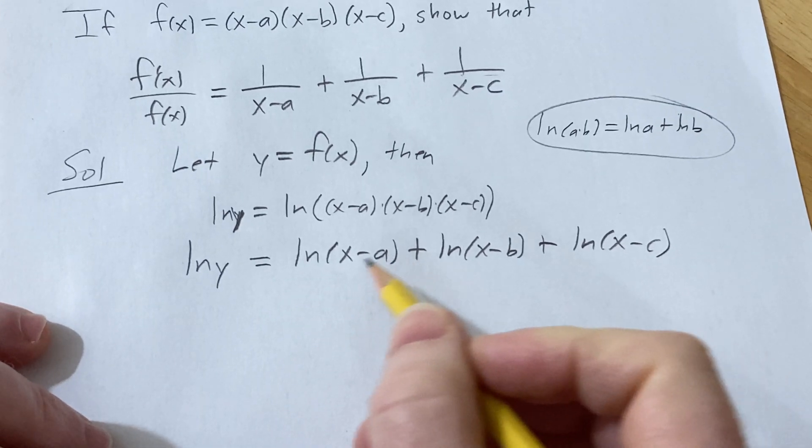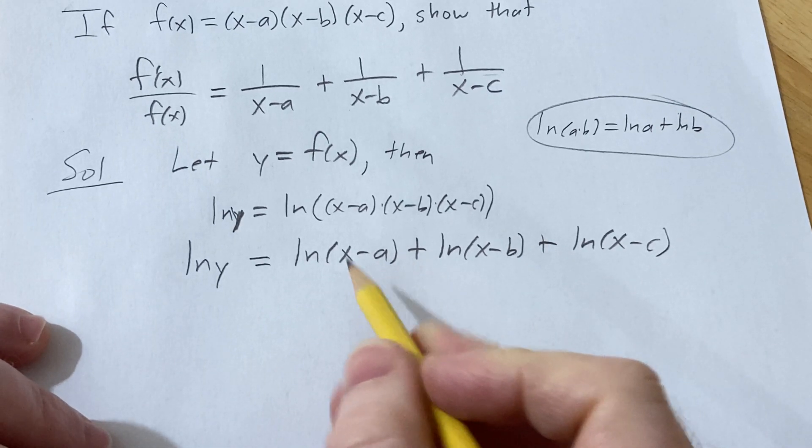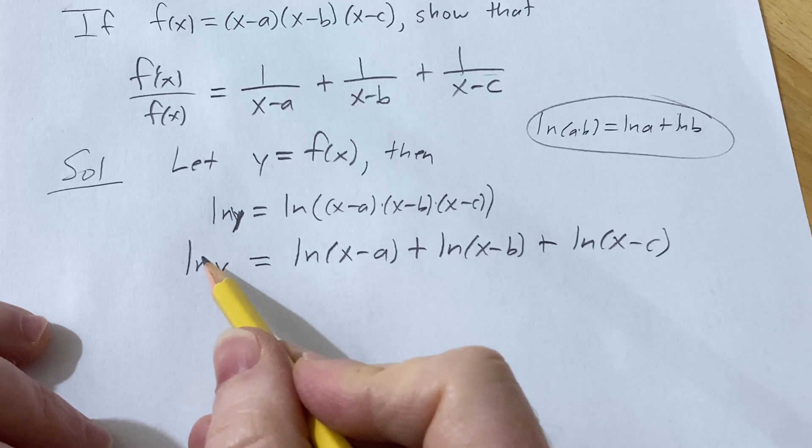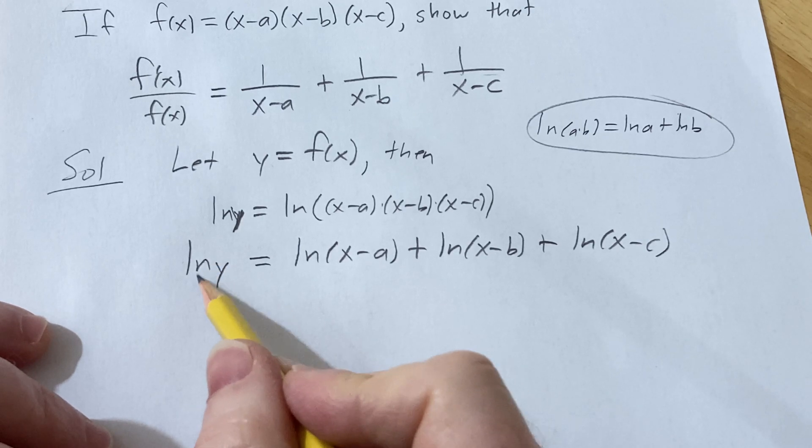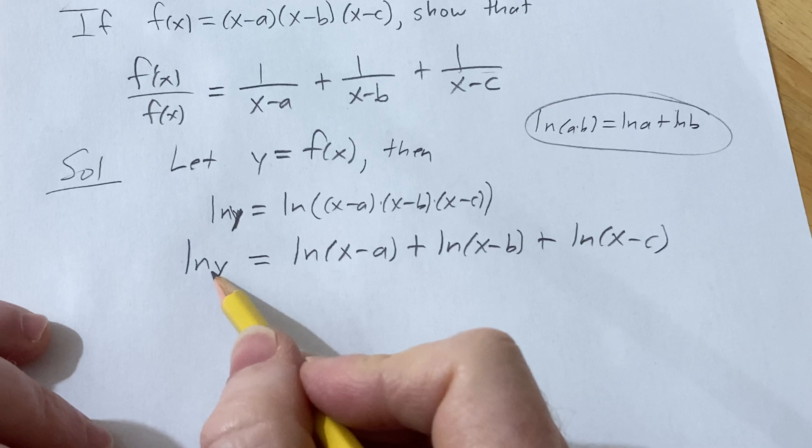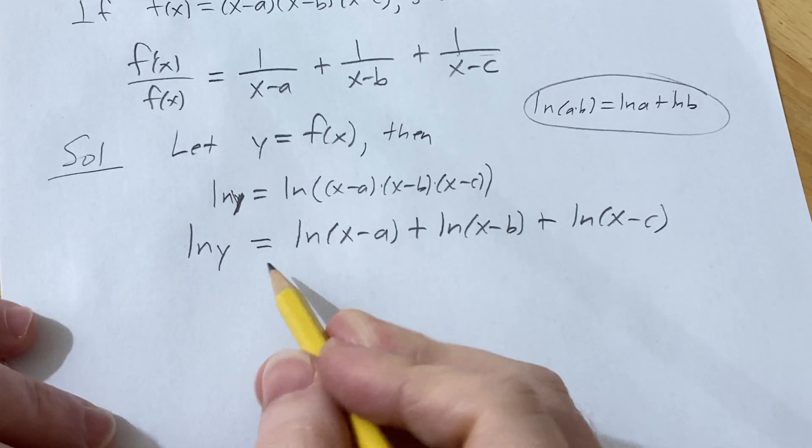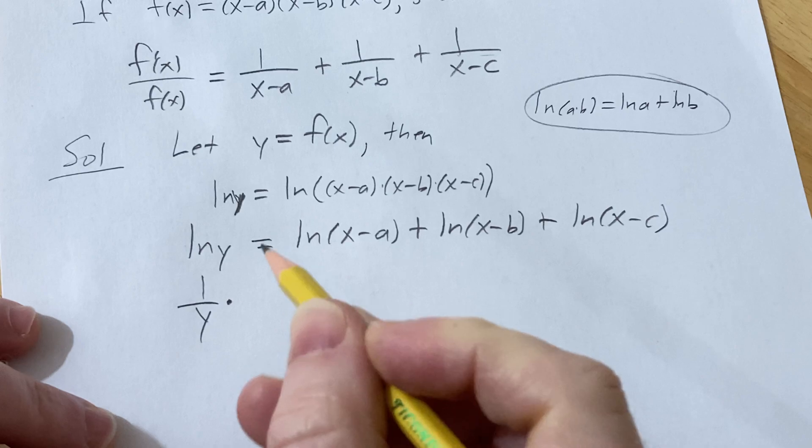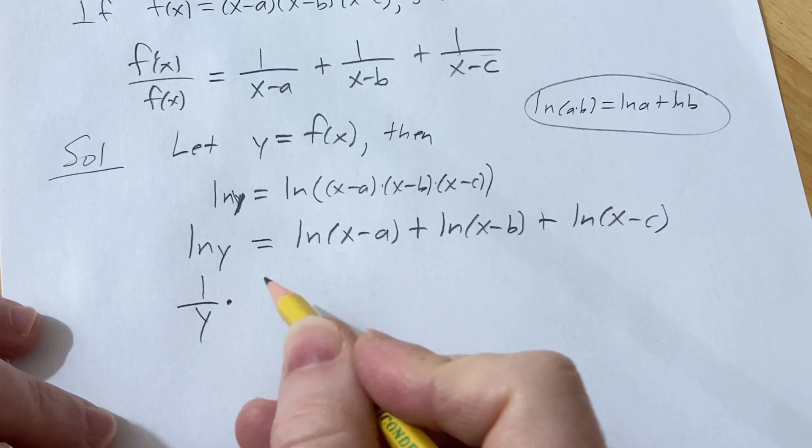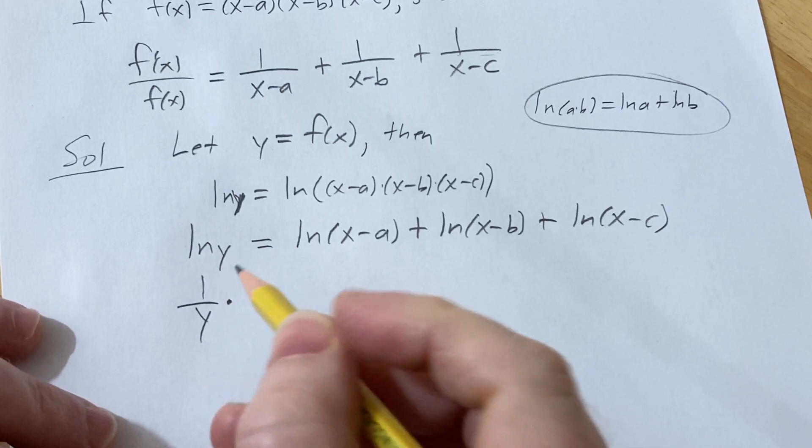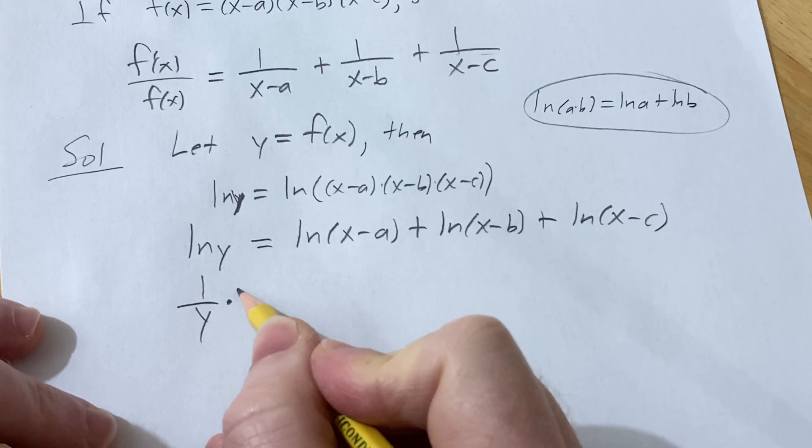And now we can take the derivative of both sides with respect to x. So doing that, recall the derivative of ln(x) is 1/x. Here it's ln(y), so it's going to be 1/y times the derivative of the inside function with respect to x. The inside function is y, so its derivative is simply y'.